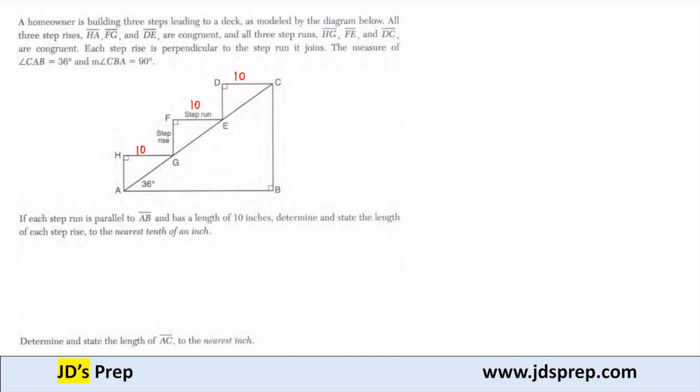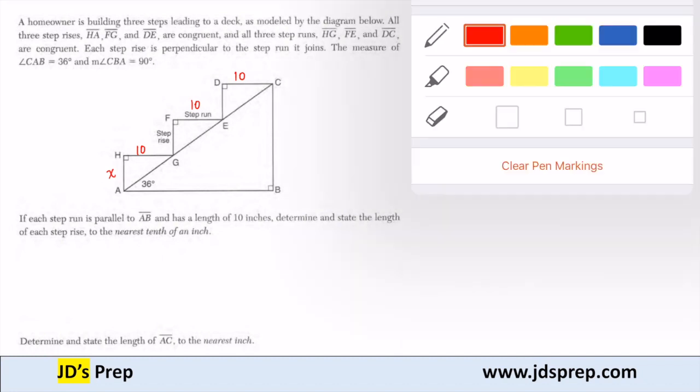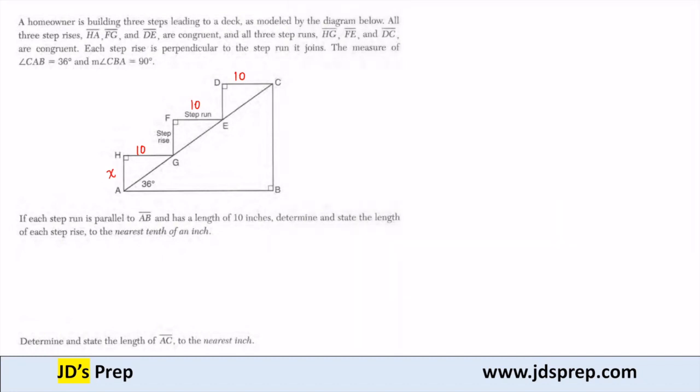So the first thing we want to find is that rise X. In order to figure that out, we're going to use the fact that each one of these runs is parallel to AB, so we actually have some alternate interior angles here. If this is 36, then I know that this angle here is also 36 using alternate interior angles.